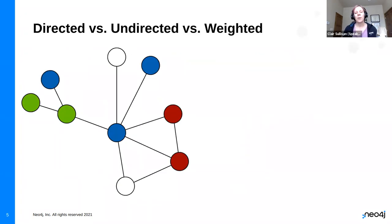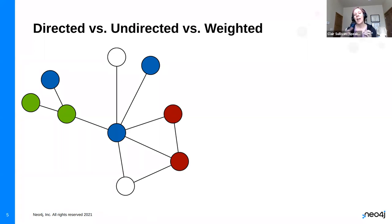Just some terminology: we have terms like directed graphs, undirected graphs, and weighted graphs. I have nodes and relationships, and those nodes are connected by relationships that don't have an arrow — that indicates an undirected graph. An example of an undirected graph might be something like Facebook. If you're friended with somebody on Facebook, they are friended with you.